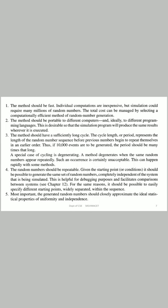The method should be fast because individual computations are inexpensive but simulation could require many millions of random numbers, so total cost can be managed by selecting a computationally efficient method. The method should be portable to different computers and ideally to different programming languages. The method should have a sufficiently long cycle — the cycle length or period represents the length of the random number sequence before the previous numbers begin to repeat in the earlier order. The random numbers should be repeatable: given the starting point, it should be possible to generate the same set of random numbers independently of the system being simulated. Finally, generated numbers should closely approximate the ideal statistical properties of uniformity and independence.